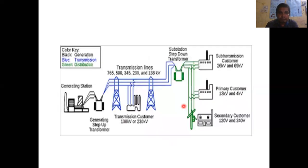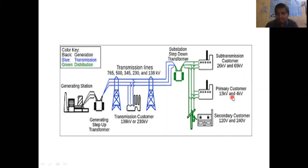You will have the power transformer in the power system — step-up transformer on the sending end and step-down transformer on the receiving end. Power is generated, stepped up, transmitted through the transmission line, stepped down, and then delivered to consumers. Secondary consumers use low voltage; primary consumers such as industries use around 30 kV.